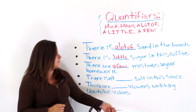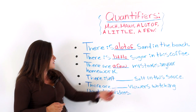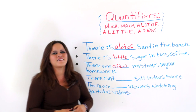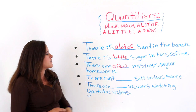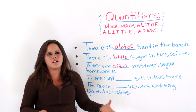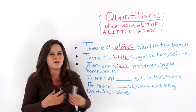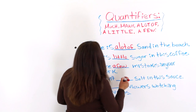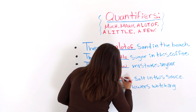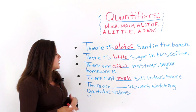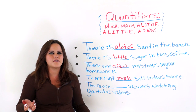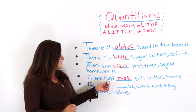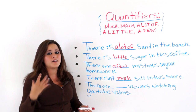There isn't blank salt in this sauce. We're talking about salt — not salt shakers, because you can't count salt itself. So we're going to write: there isn't much salt in this sauce. If we were talking about salt shakers, we would say there aren't many, right? Also, the verb 'is' here is also indicating that it's an uncountable noun.